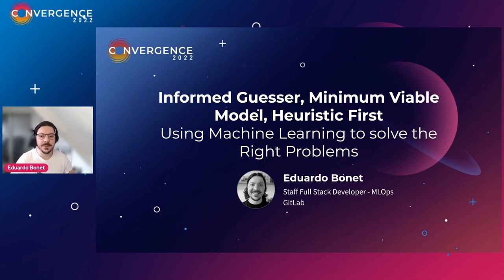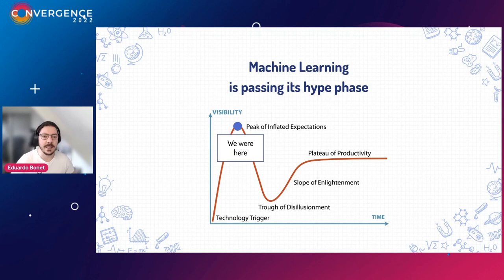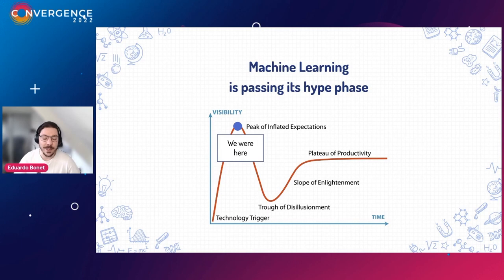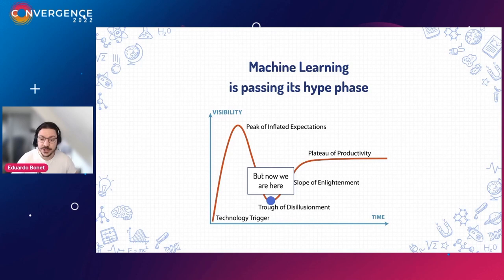Hello everyone and welcome to this talk about informed guesser, minimal viable model, and heuristic first. Right now machine learning is finally passing its hype phase. We went through the hype of machine learning where expectations were exponentially high. Everybody wanted machine learning, and that led to a lot of issues because machine learning is not a magic wand that solves everything. Right now we are in the disillusionment phase where we are starting to learn that machine learning is not for everything. My goal with this talk is to push into the enlightenment phase — understanding where and how to bring business value out of machine learning.